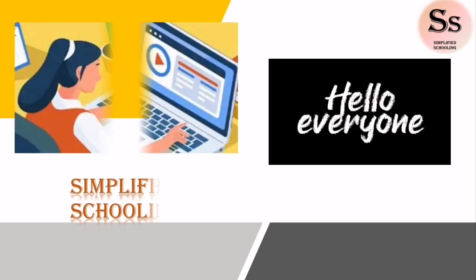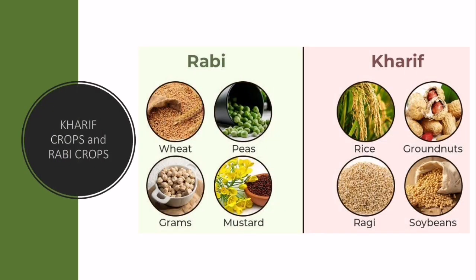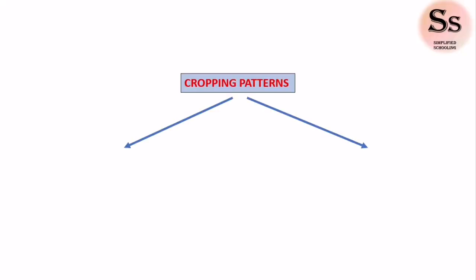Welcome back to Simplified Schooling. In today's video, let's have a look at Kharif crops and Rabi crops. India is a vast country where climatic conditions like temperature, humidity, and rainfall vary from one region to another. Due to such variations, a variety of crops are grown in different parts of the country, but despite all these diversities, two broad cropping patterns can be identified, and accordingly two main types of crops are cultivated in India: Kharif crops and Rabi crops.